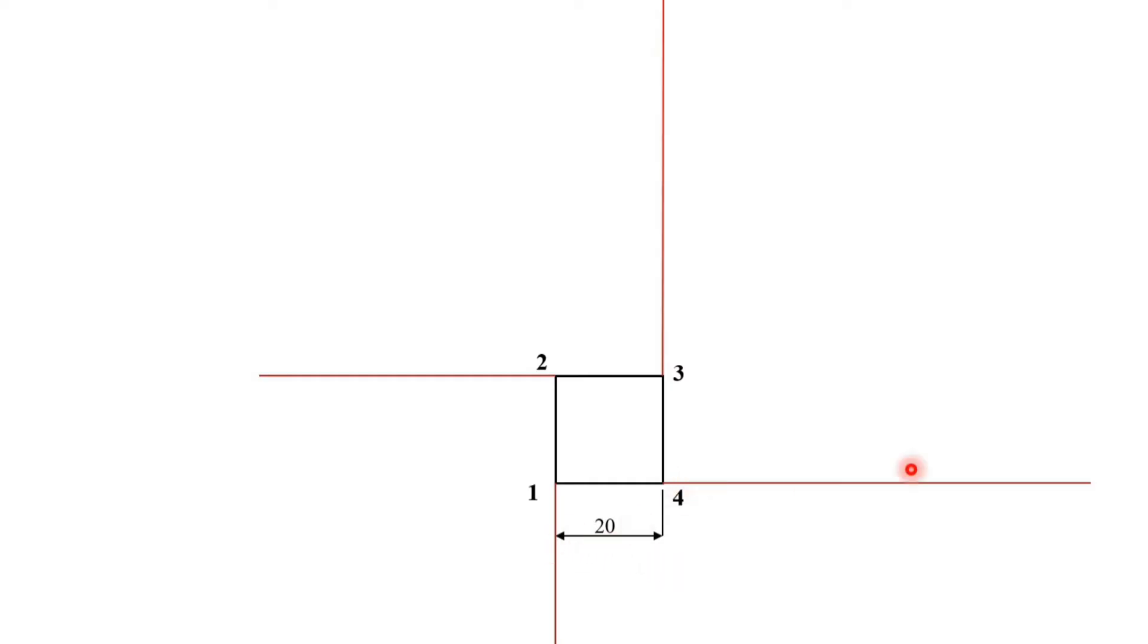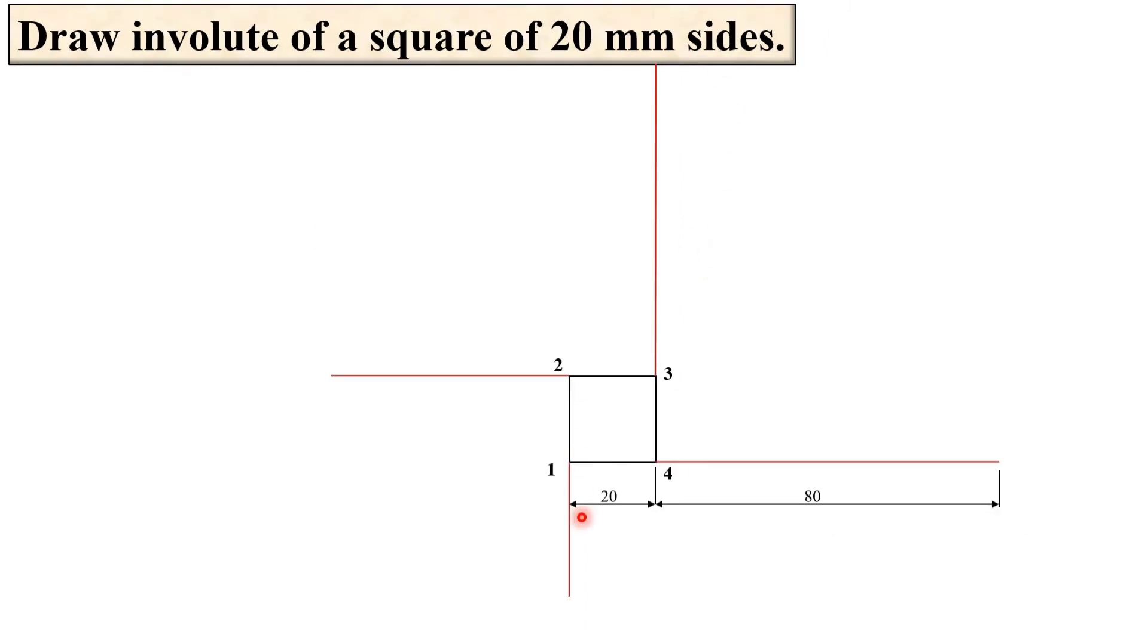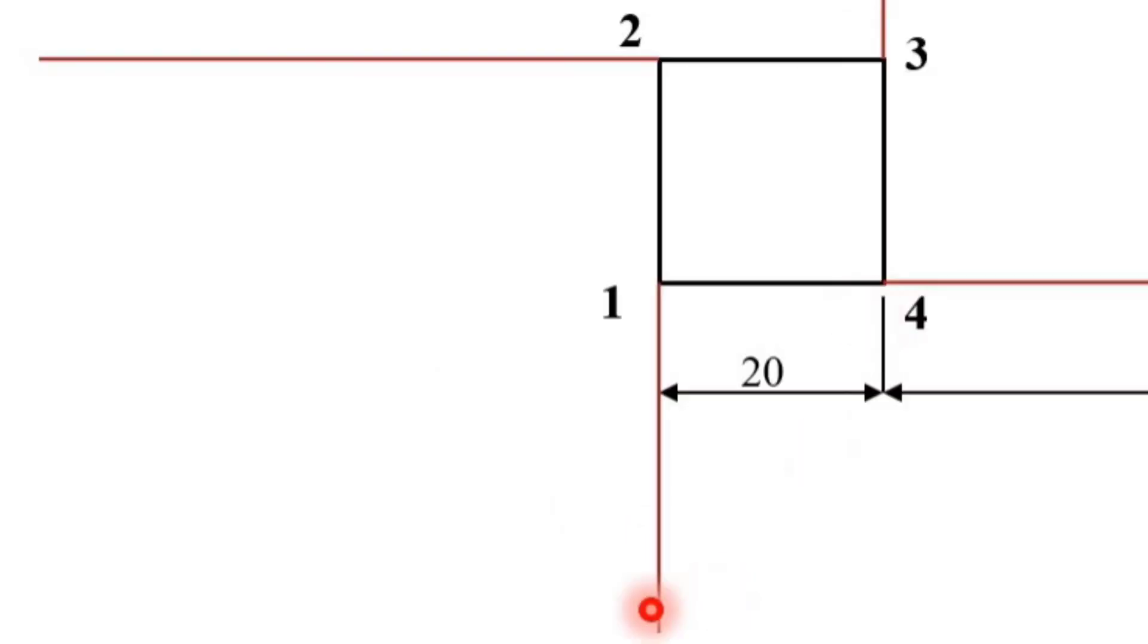Now you know that the length of the string required for this involute of square is exactly equal to 20 into 4, so it is 80 mm. So here you can assume the string to be wound or unwound because it is not mentioned in the description. Here I am going to assume the string is going to unwound.